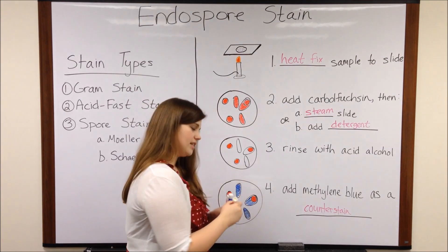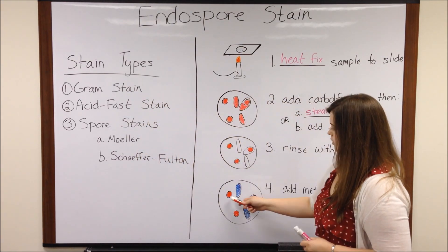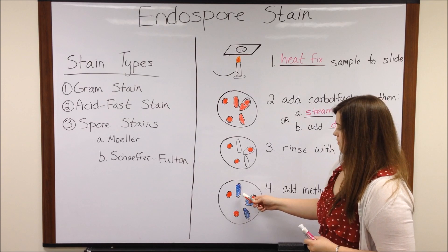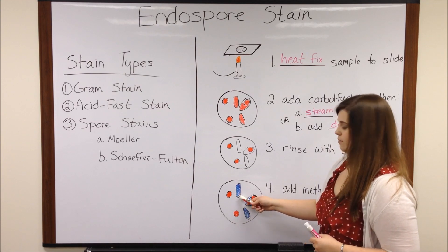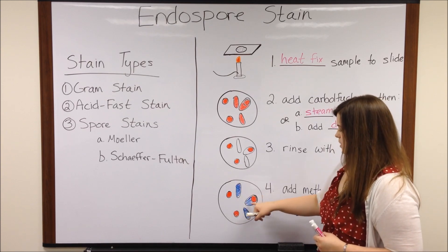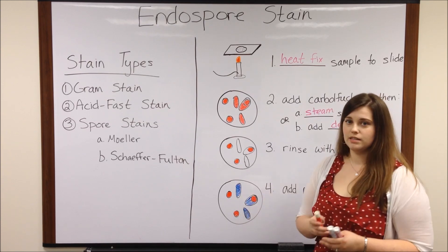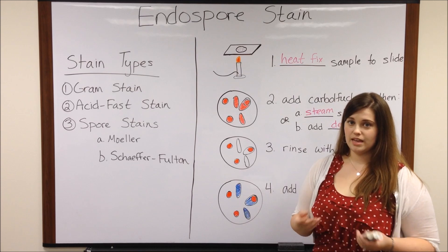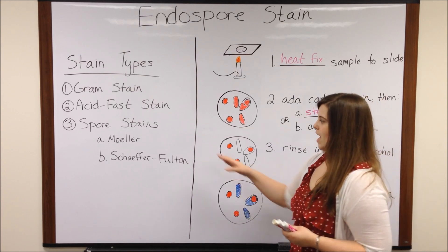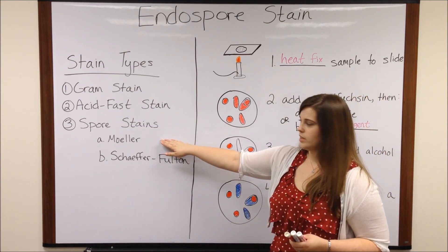So with a stain like this, you can see red endospores. You can see blue vegetative bacteria. You can even see bacteria that are in the process of forming endospores. So that is the Molar spore stain.